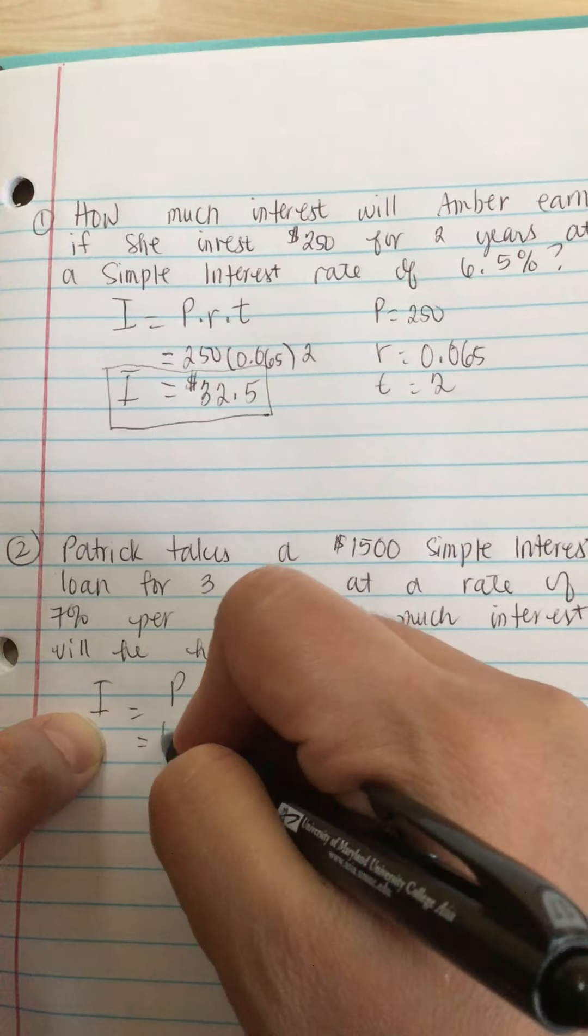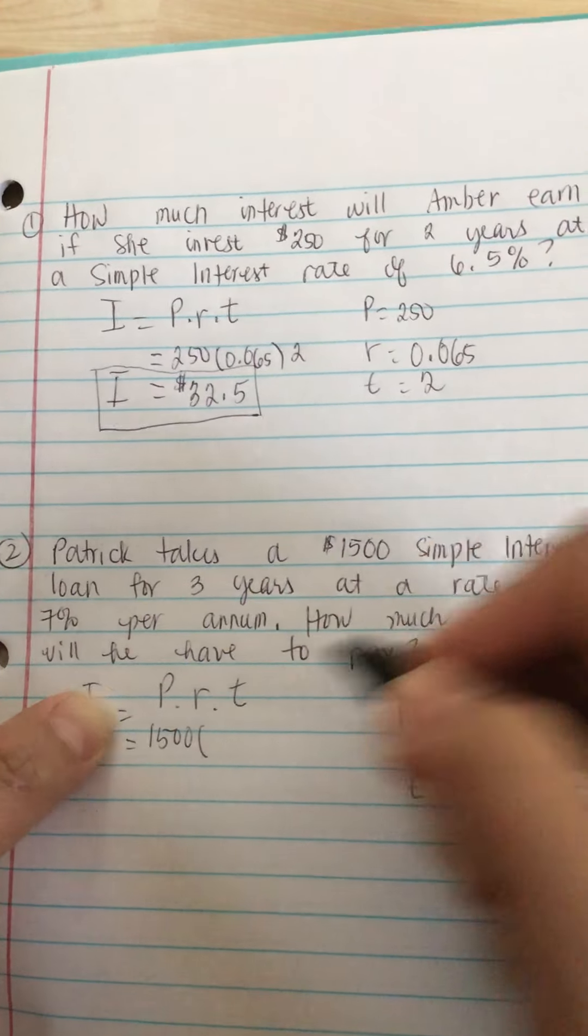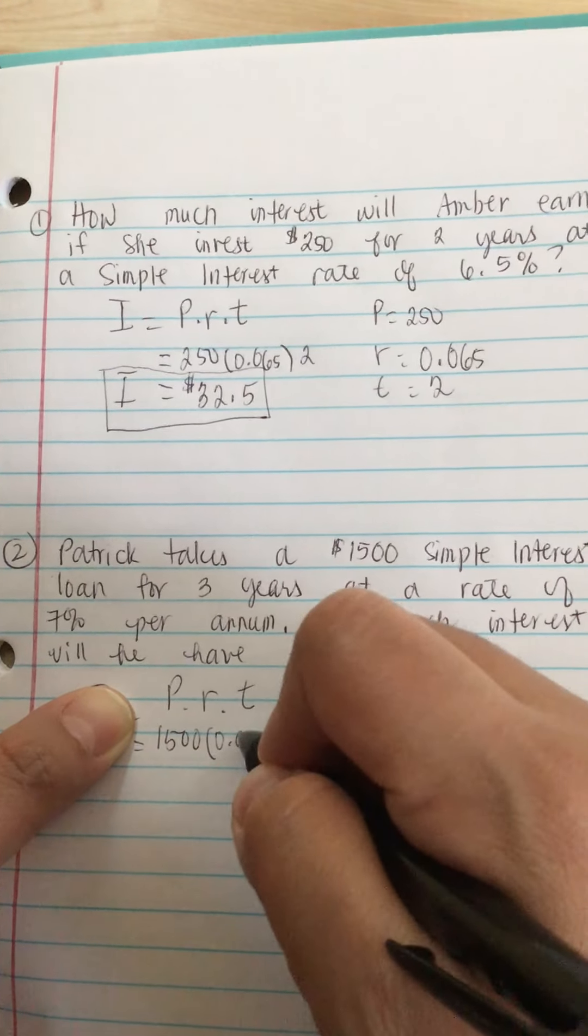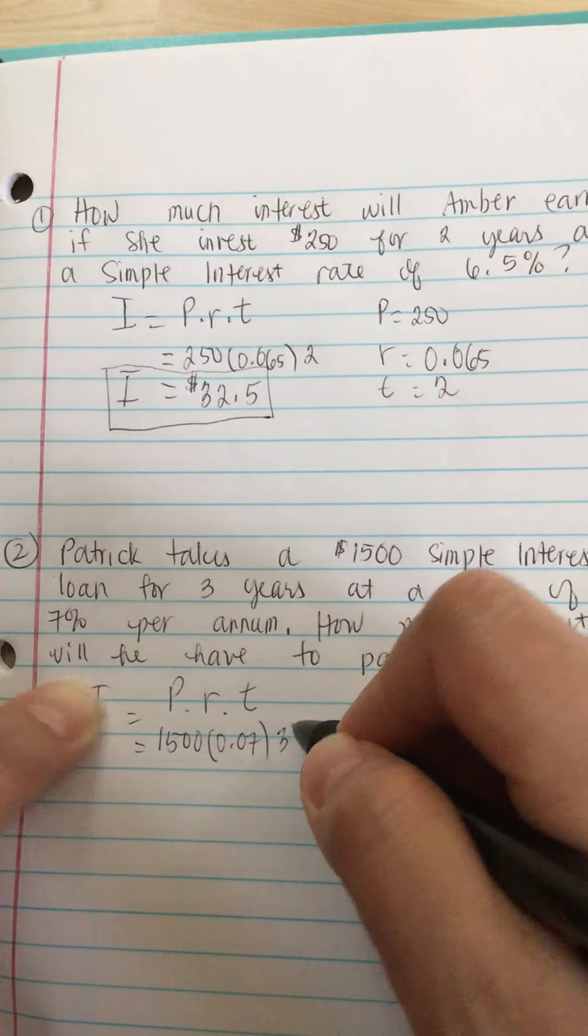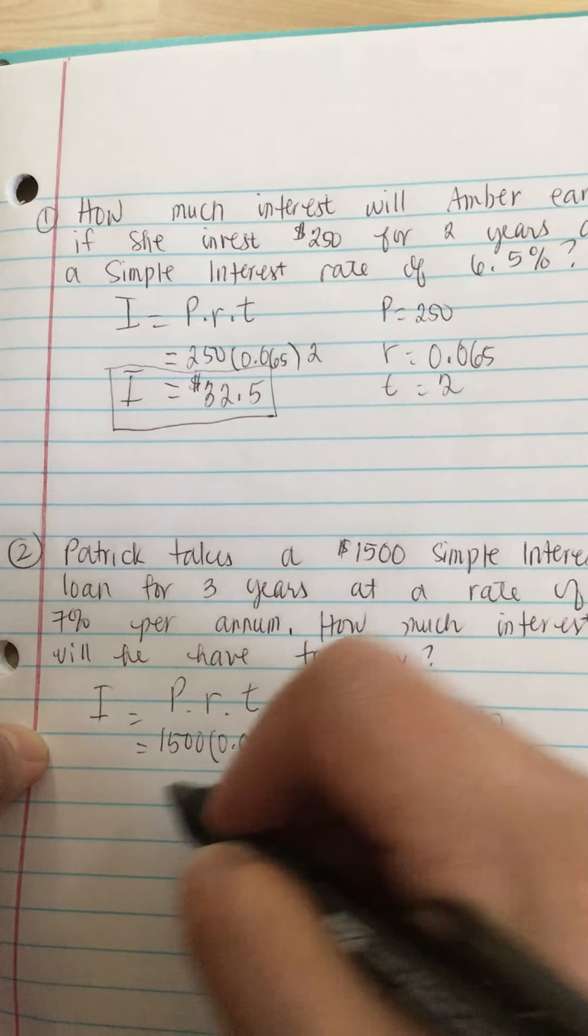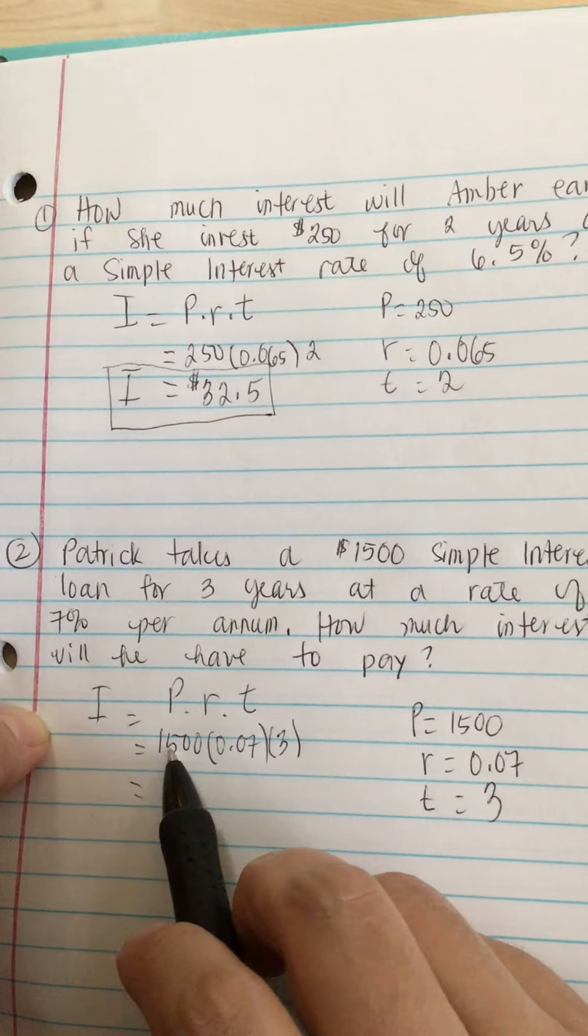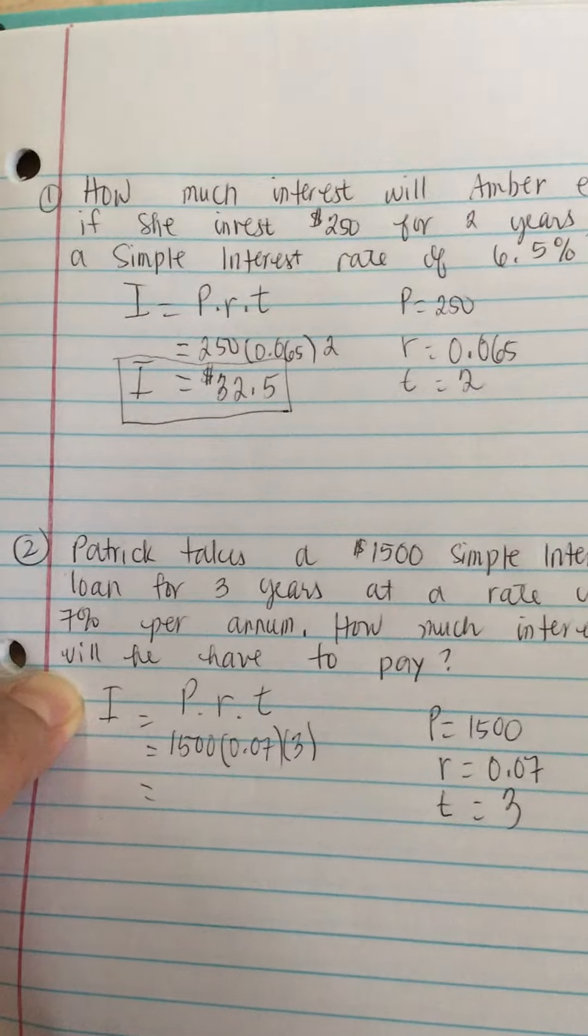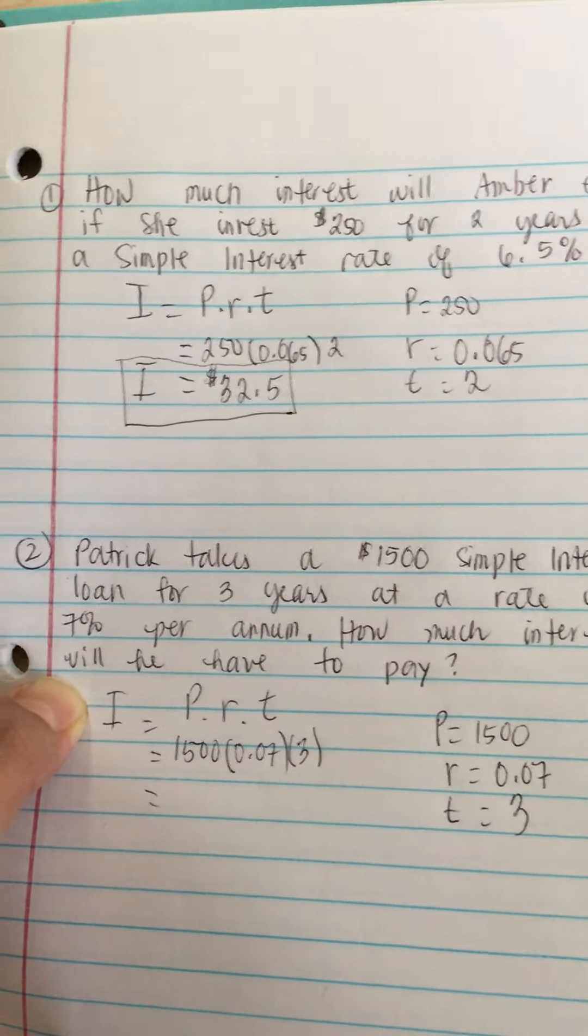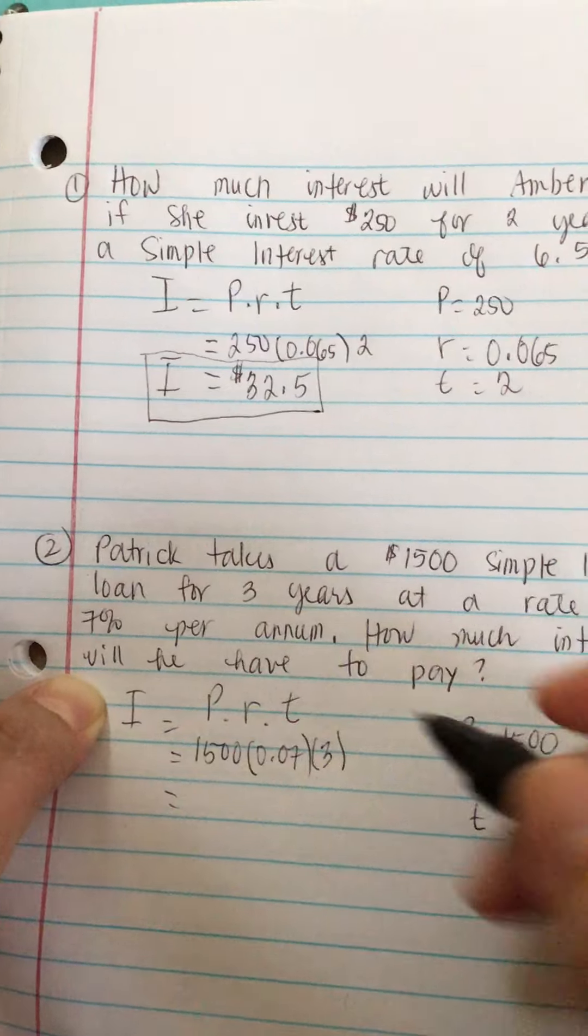So 1,500 times 0.07 times 3. Now we multiply this. 1,500 times 0.07 times 3. And we get $315.